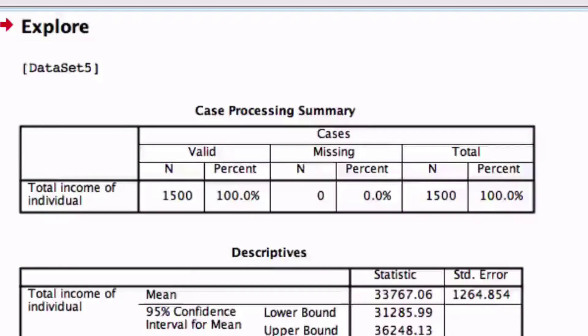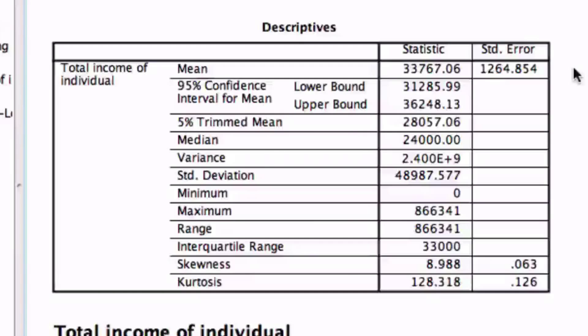From the output screen, we have our summary showing all the total number of cases and our descriptives. The descriptives show us a large list of information we both need and don't need. The list shows our mean, confidence interval, median, variance, standard deviation, minimum, maximum, range, interquartile range, skewness, and kurtosis. For confidence interval mean, we only need to know the mean and the upper and lower bound — also known as the positive and negative values in the confidence interval equation.